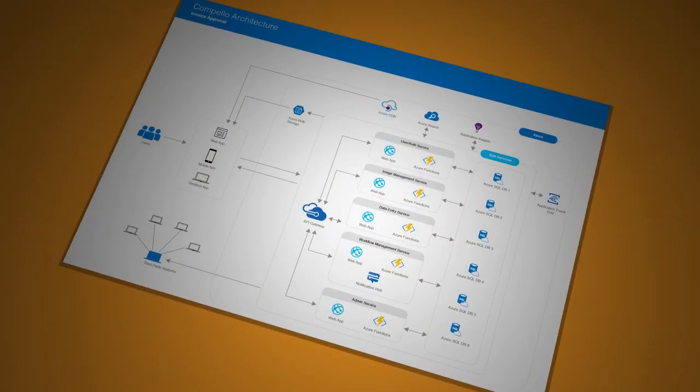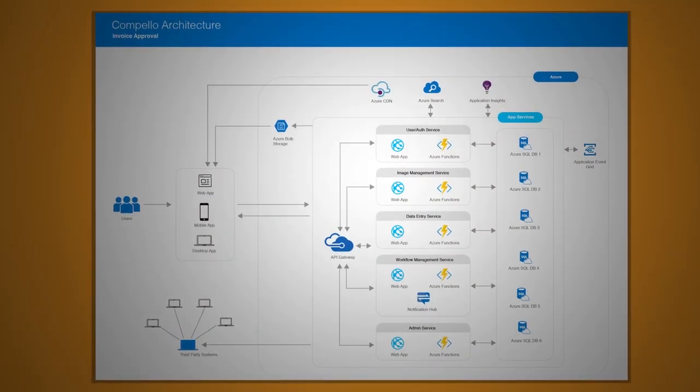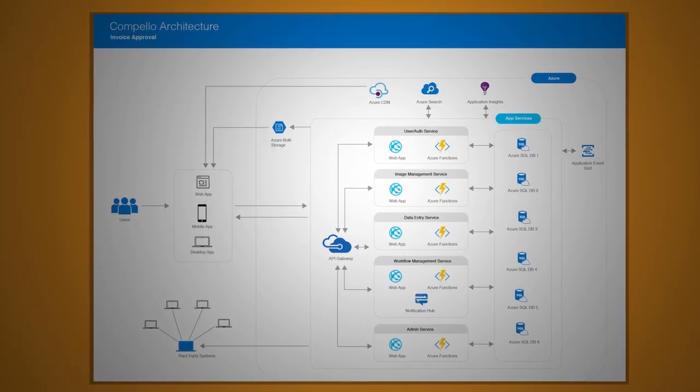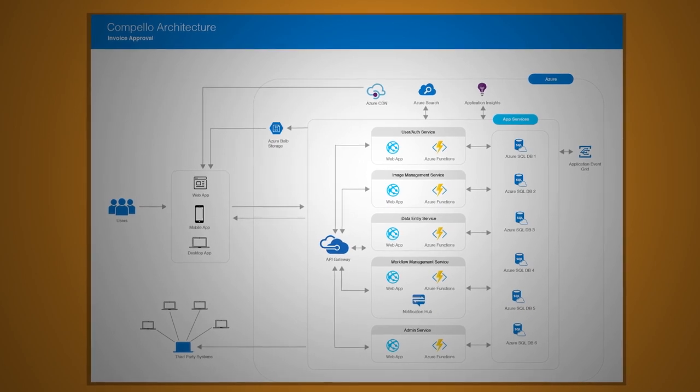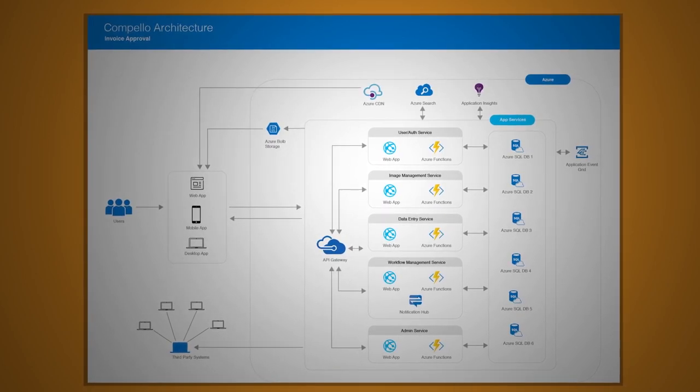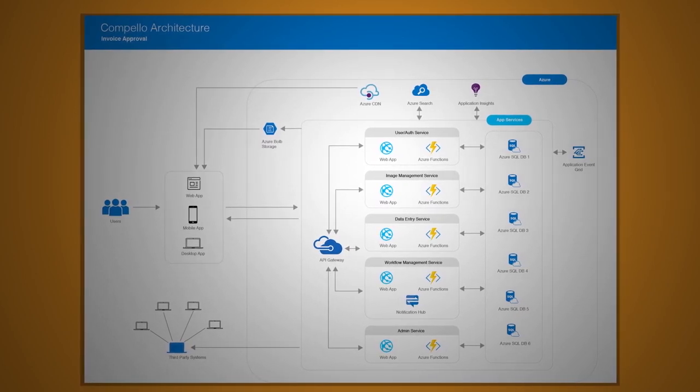As you can see in the diagram, there are three types of apps we are providing for customers to connect to our system. The first one is the web app, which includes all the functions we have in our system. Then we have a special mobile app which only the approvers can use to manage their workflow invoices. Apart from that, we also have a desktop app.